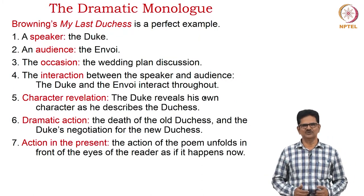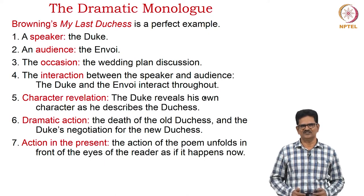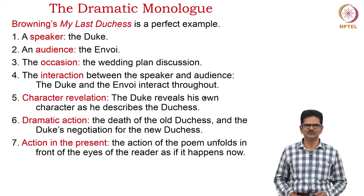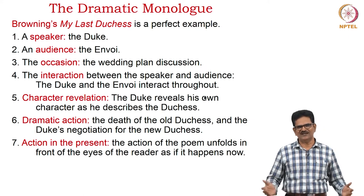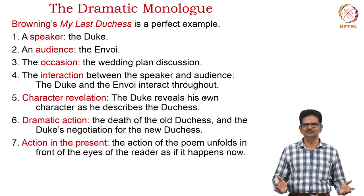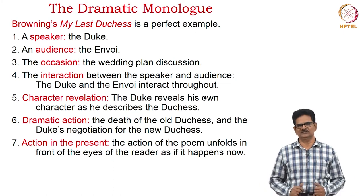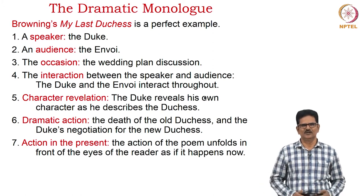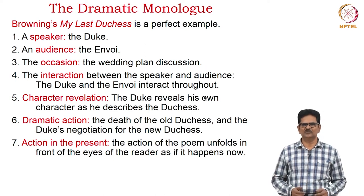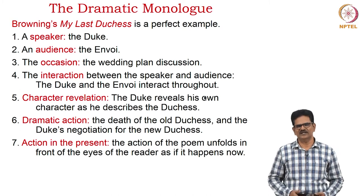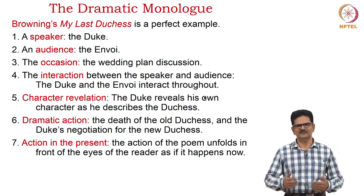The example chosen is Browning's My Last Duchess, which has all seven features. The speaker is a duke; the audience is the envoy, that is a messenger. The occasion is a wedding plan discussion between the duke and the envoy. The interaction between the speaker and audience occurs throughout the poem. We have the character revelation of the duke as well as the duchess. The dramatic action is the death of the duchess, which led to finding a new duchess. The whole action takes place in the present, unfolding before the reader as the poem is read.